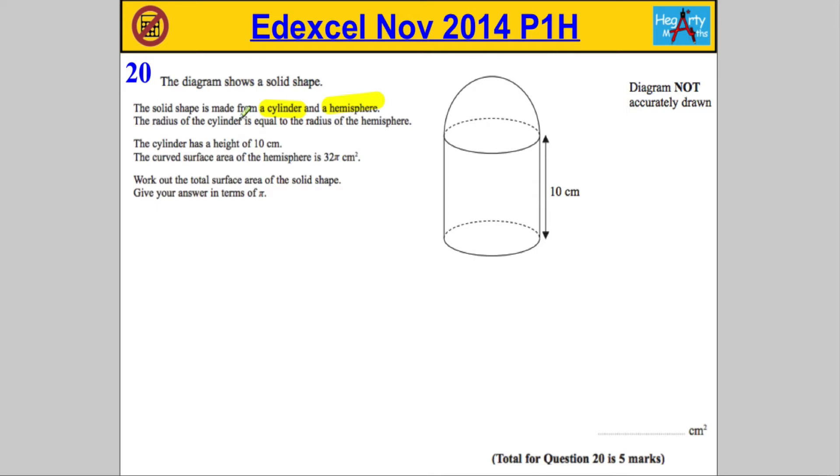The cylinder has a height of 10 centimeters. The curved surface area of the hemisphere is 32π. And we're asked to work out the total surface area of the solid shape.